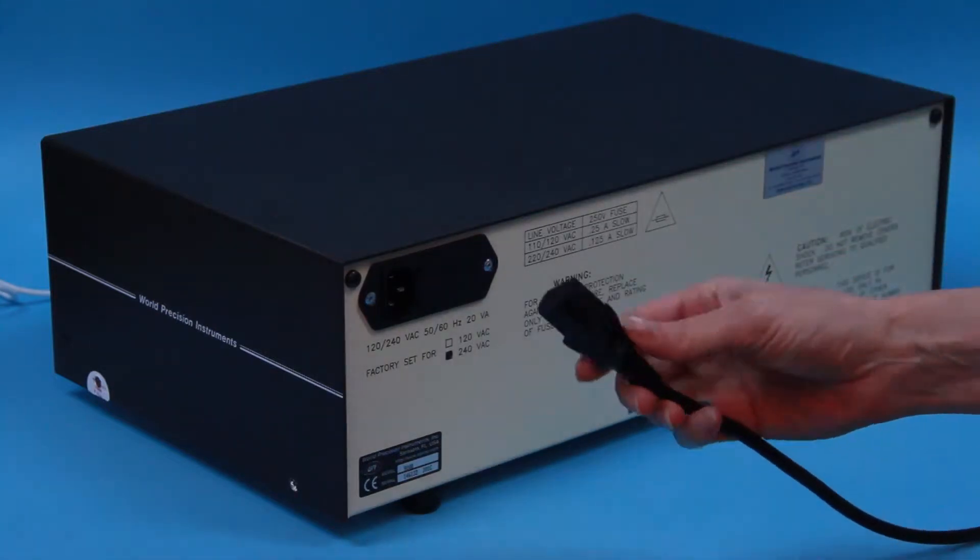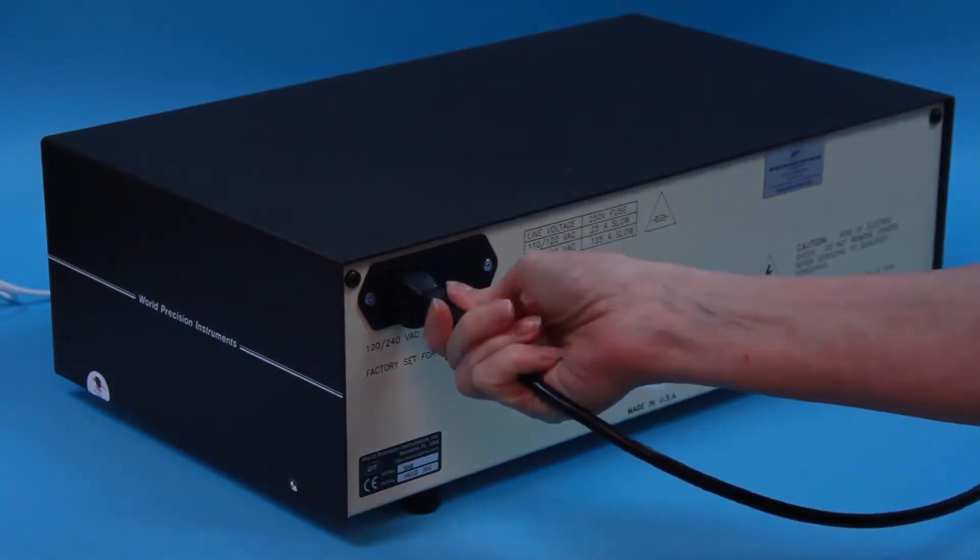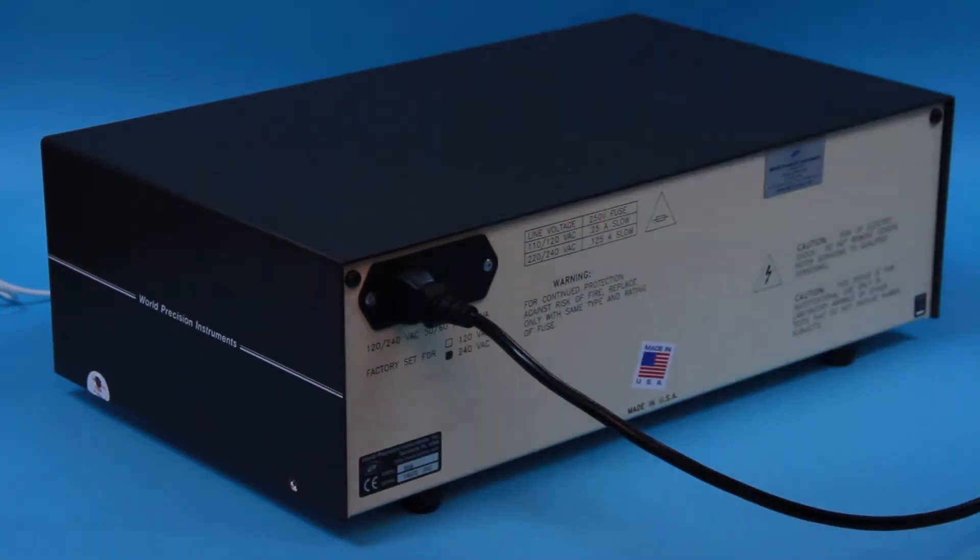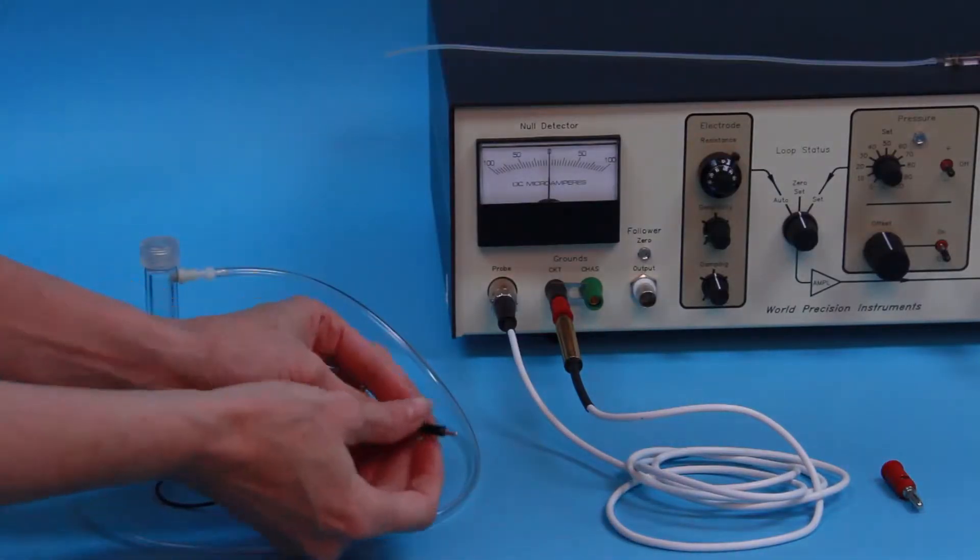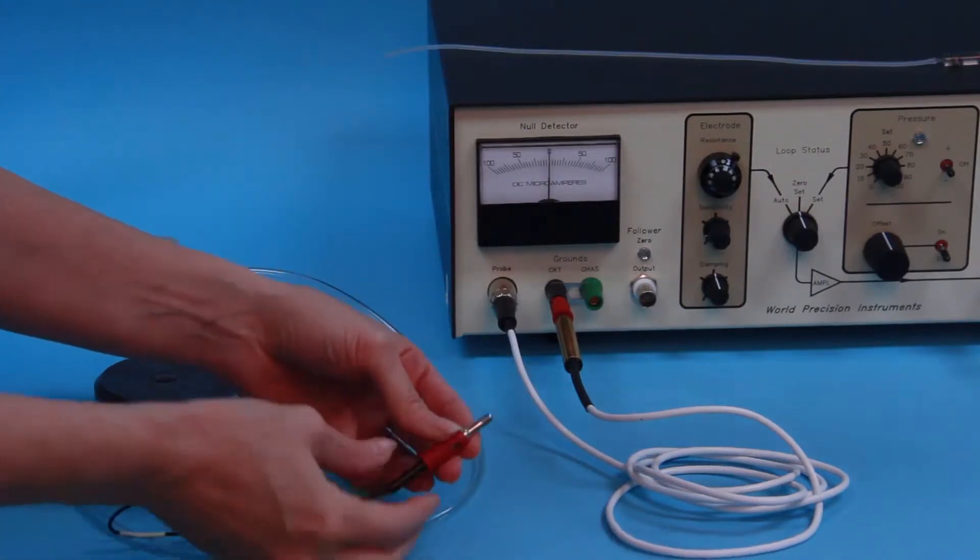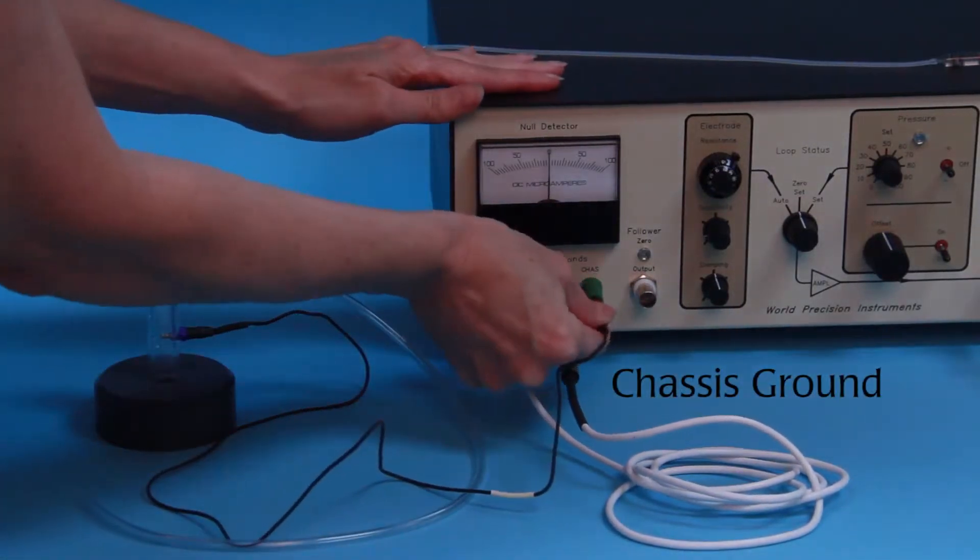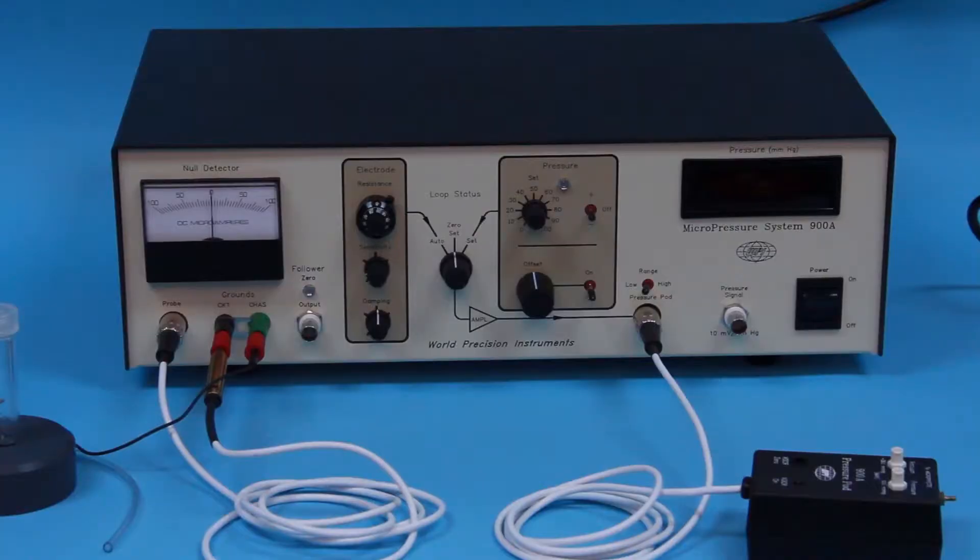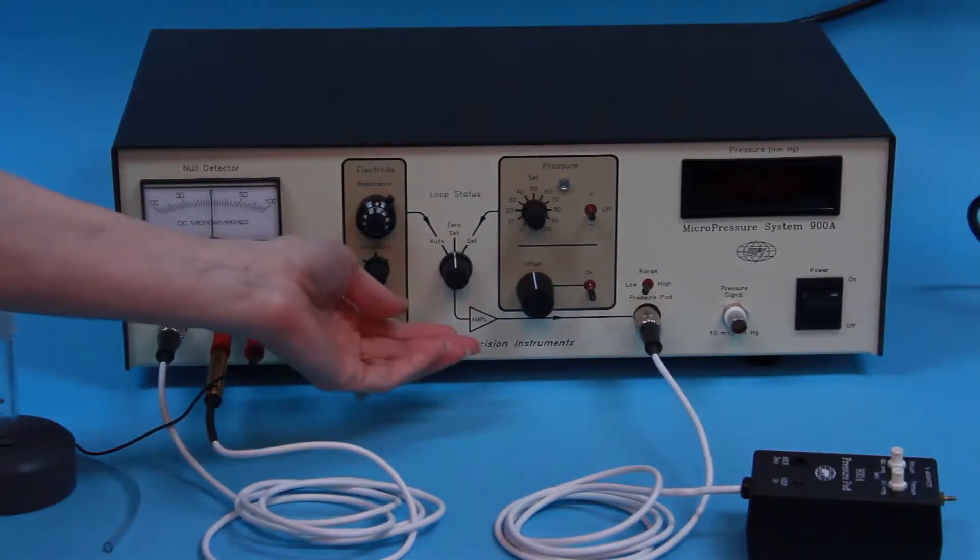Connect the power cord to the receptacle on the rear panel of the control unit. Plug into the wall socket. Connect the reference electrode from the Cal 900A, or the experiment, to the ground terminal marked CHAS on the front panel of the control unit. Place the loop status in the zero set position.